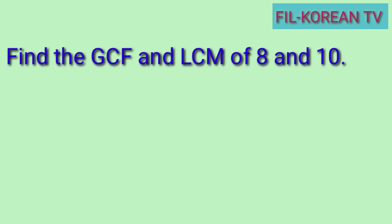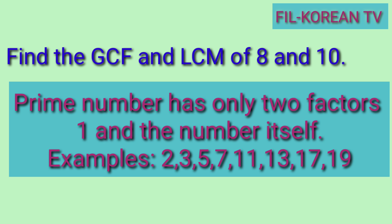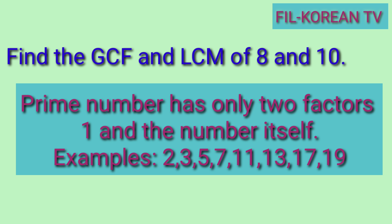When we say prime, it is a number with only two factors: one and the number itself. Like 2, 3, 5, 7, 11, 13, 17, and 19. These are the prime numbers below 20. So we can use these numbers in finding the GCF and LCM using the Continuous Division Method.